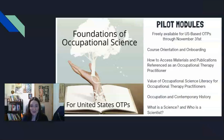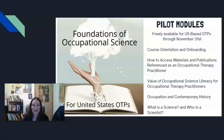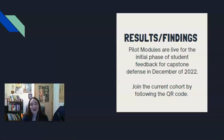For the capstone period of the course release, it will be freely available to US-based OTPs, particularly through November 30th. This will include the course orientation onboarding, which is currently live, as well as the module on how to access materials and publications as an OTP after you no longer have a university login. Three OS content modules will also be released over this period, including the value of occupational science literacy for OTPs, occupation and contemporary history, and what is the science and who is the scientist. The results are currently ongoing as this is launching the current release of the project.